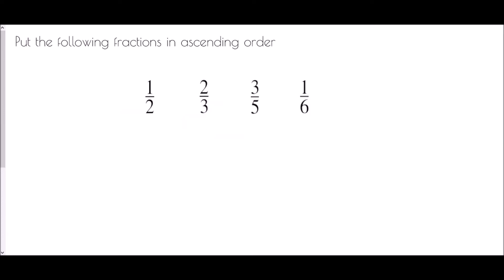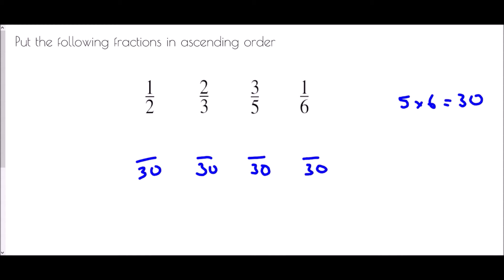One more: one-half, two-thirds, three-fifths, and one-sixth. We need a common denominator of 2, 3, 5, and 6. We can't just use the largest number because 5 does not go into 6. We need a number that both 5 and 6 go into. If we multiply 5 by 6, we get 30. Is 30 a multiple of 2? Yes. A multiple of 3? Yes. So 30 works perfectly — let's put 30 on the bottom of each fraction.